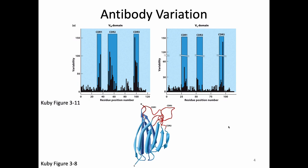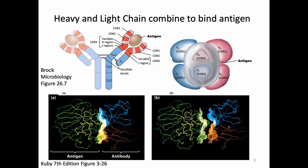Those regions are called the hypervariable regions (HVR) because they are so variable. Importantly, these hypervariable regions are actually the three parts that touch the antigen. They are also known as CDR 1, 2, and 3 — the complementarity determining regions — because they determine which antigen is complementary. They are the things that actually touch the antigen and determine which antigen fits.